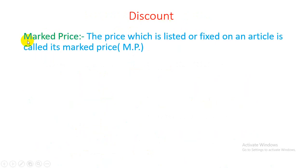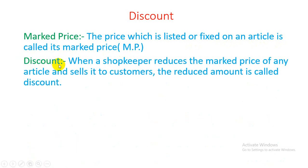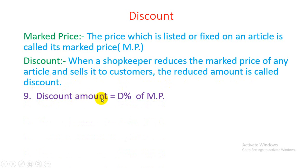Marked price (MP): the price which is listed or fixed on an article is called its marked price. When a shopkeeper gives a reduction on the marked price of an article and sells it to customers, the reduced amount is called discount. Discount amount = discount percent of MP.